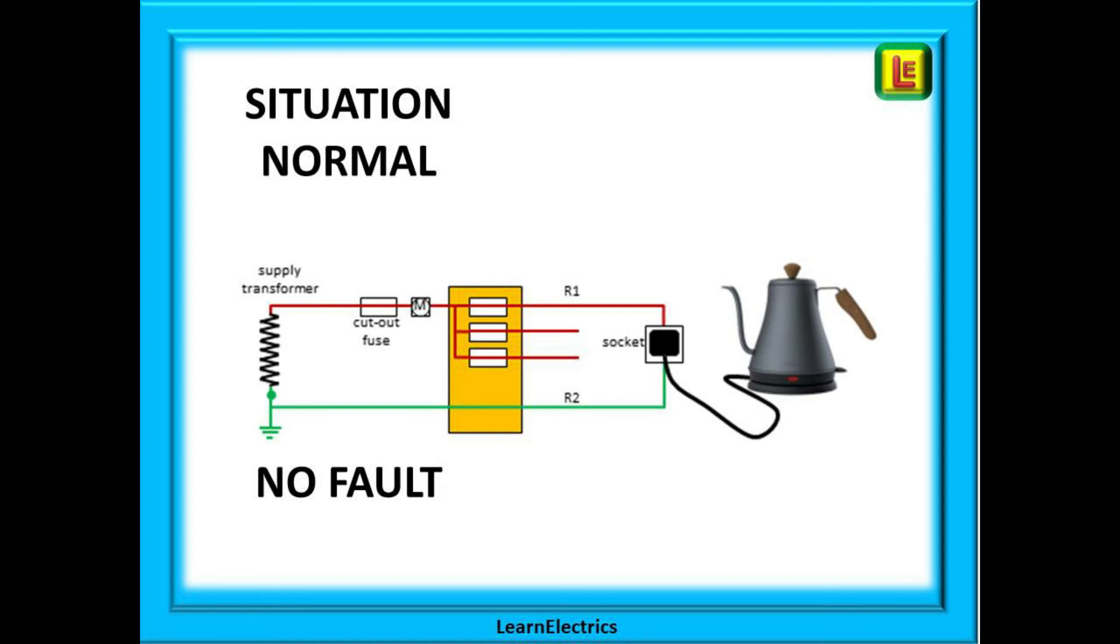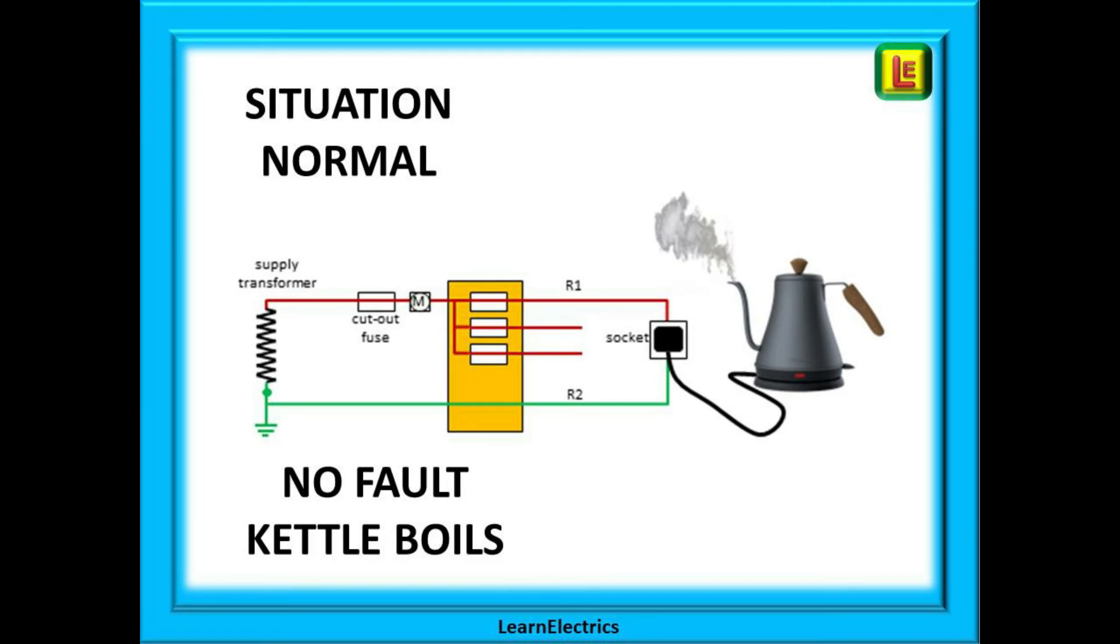Let us look then at an example. Here we have a 20 amp B type BS EN 60898 MCB that is protecting a radial socket circuit. There is no fault with the kettle that is plugged into it or with the system. We can add water to the kettle and switch it on. 10 or 12 amps flows through the kettle elements to heat the water. A short while later the kettle boils. All perfectly normal and no faults.